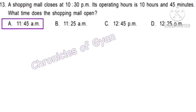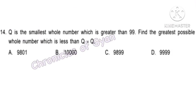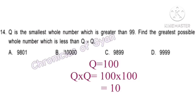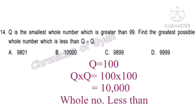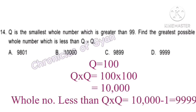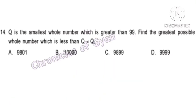Question 14. Q is the smallest whole number greater than 99. Find the greatest possible whole number less than Q times Q. The smallest whole number greater than 99 is 100. Q times Q equals 100 times 100 equals 10,000. The greatest whole number less than 10,000 is option D — 9,999.